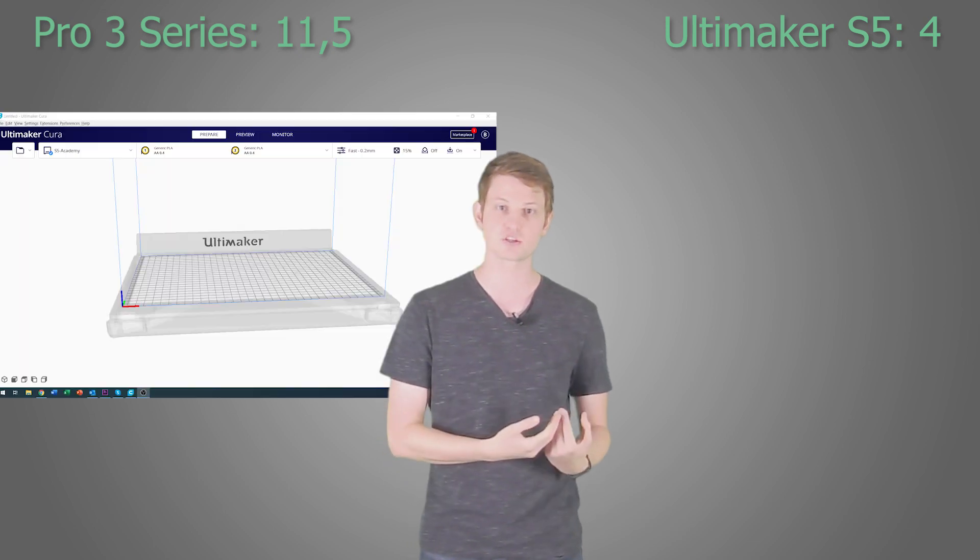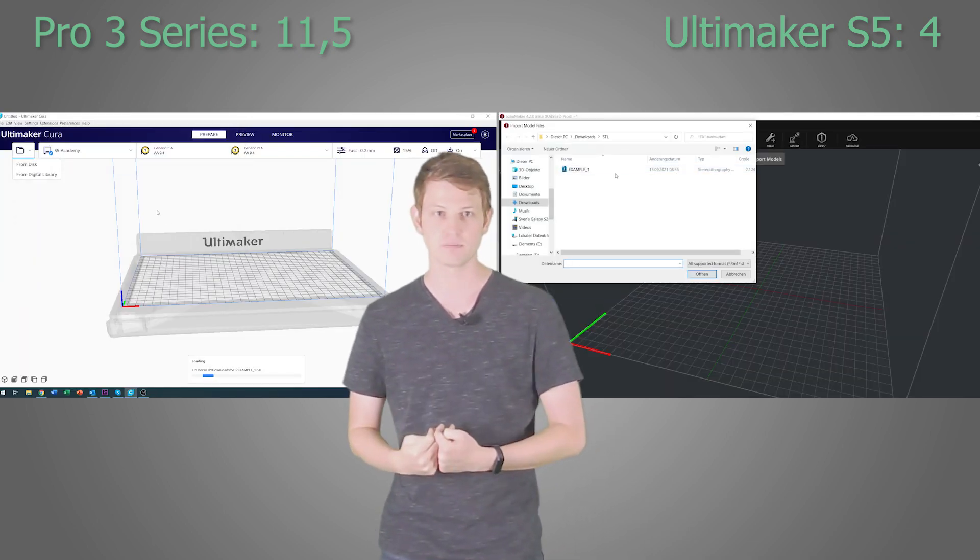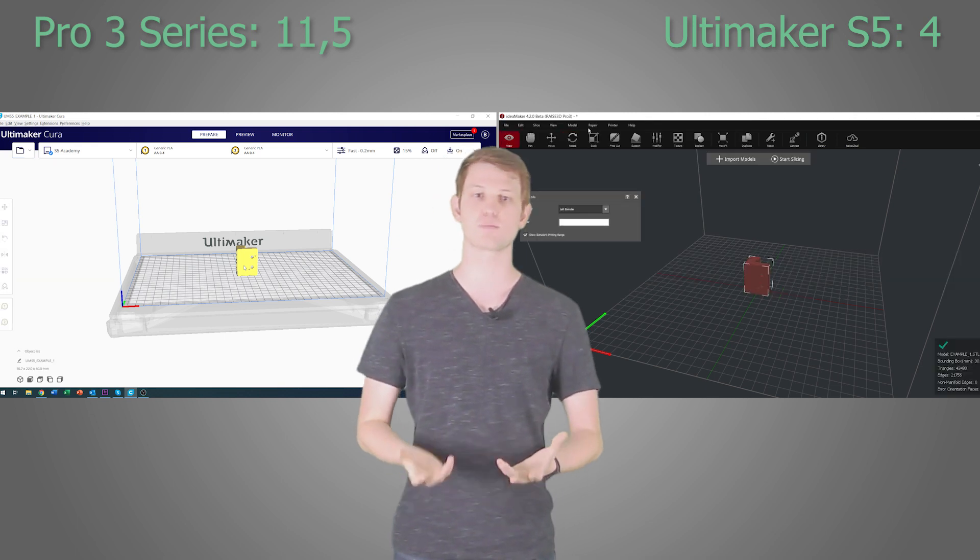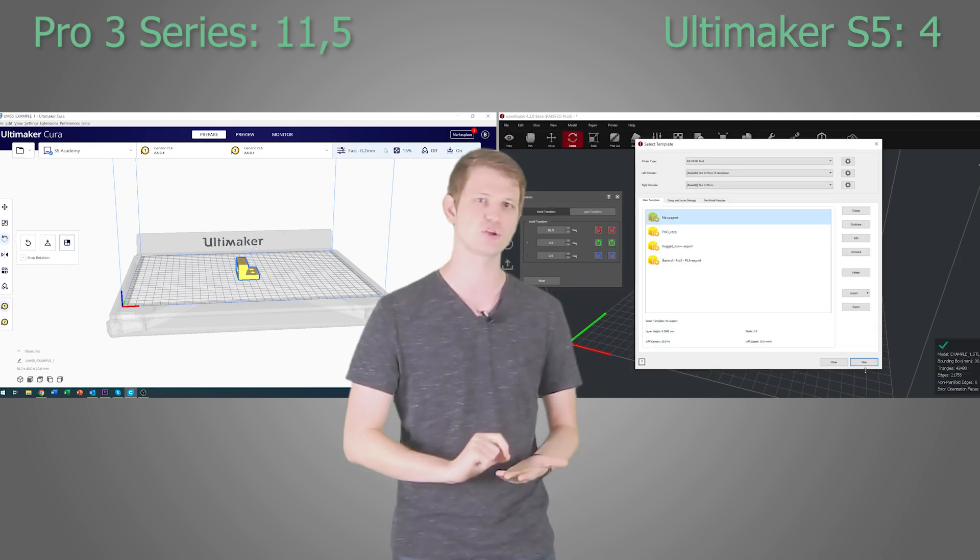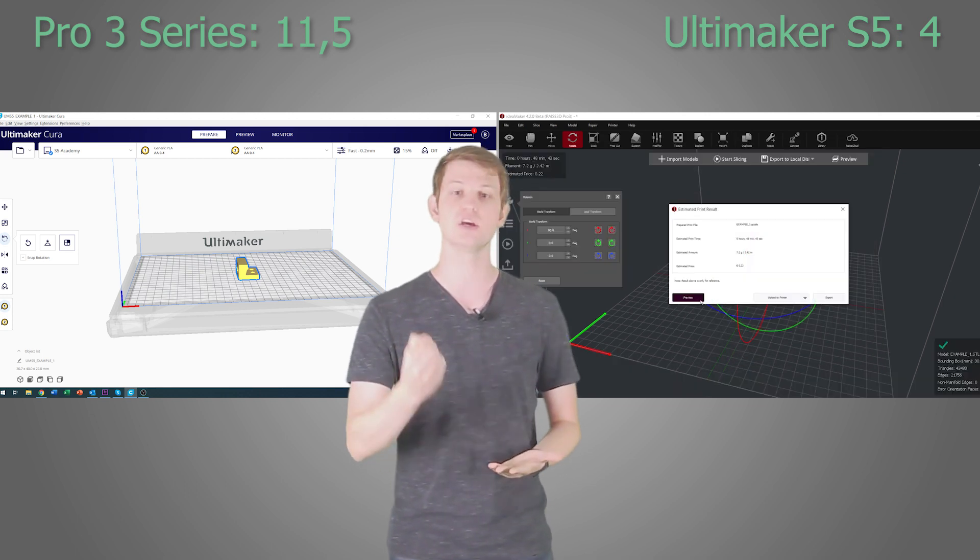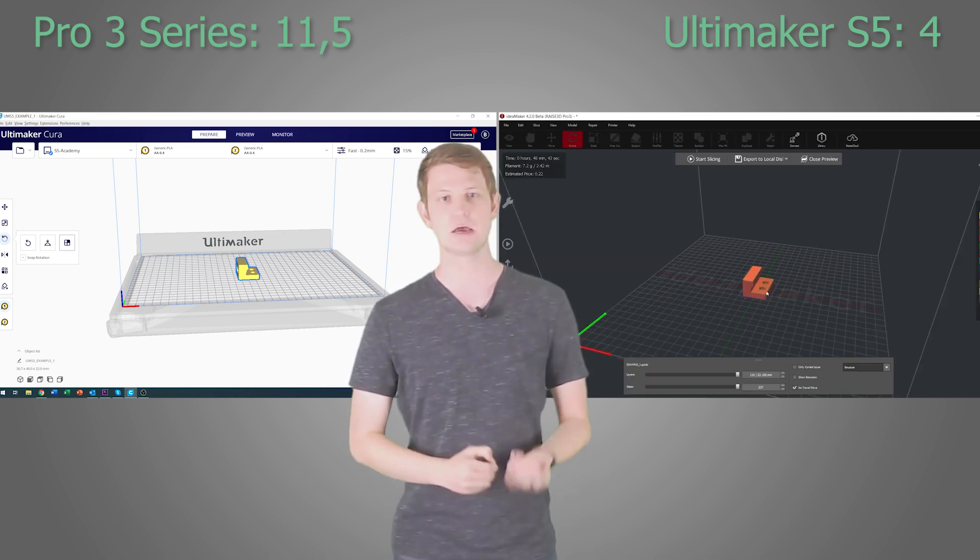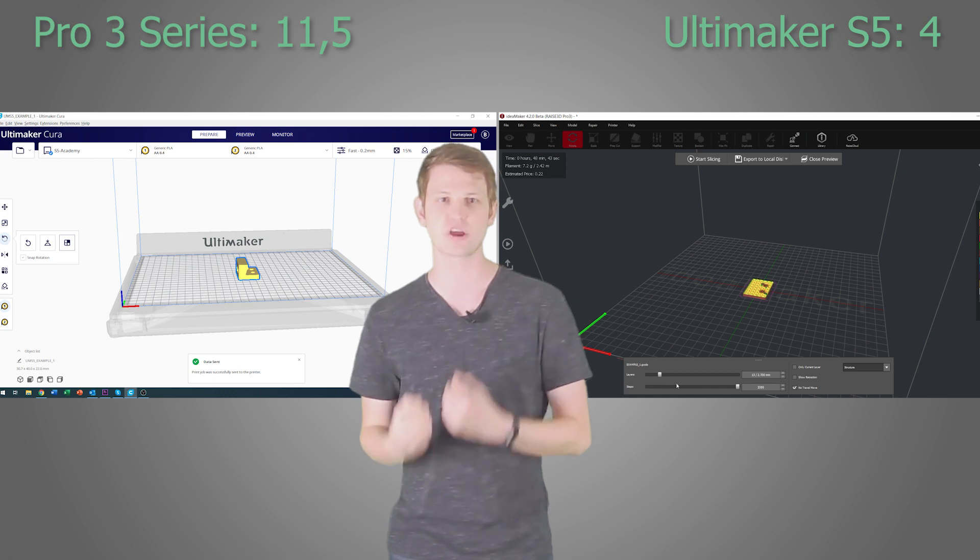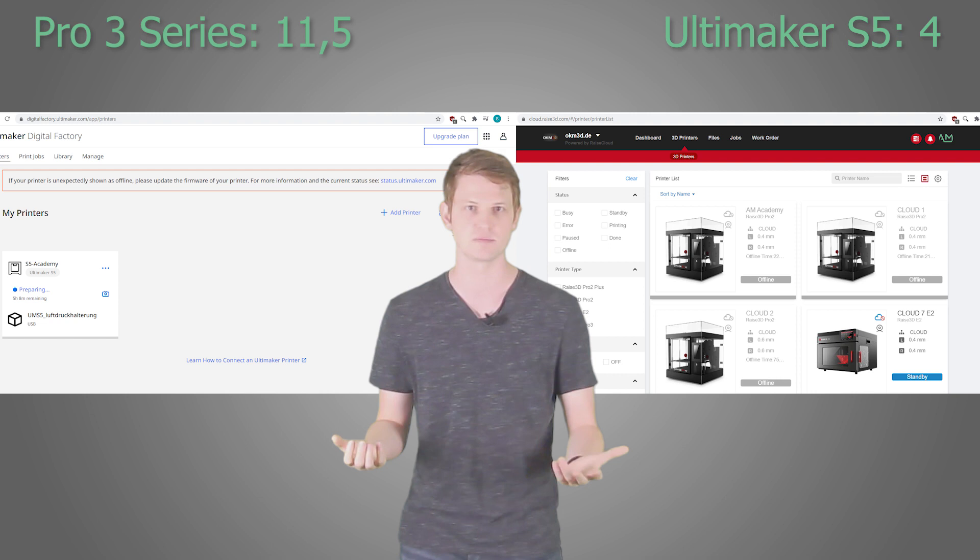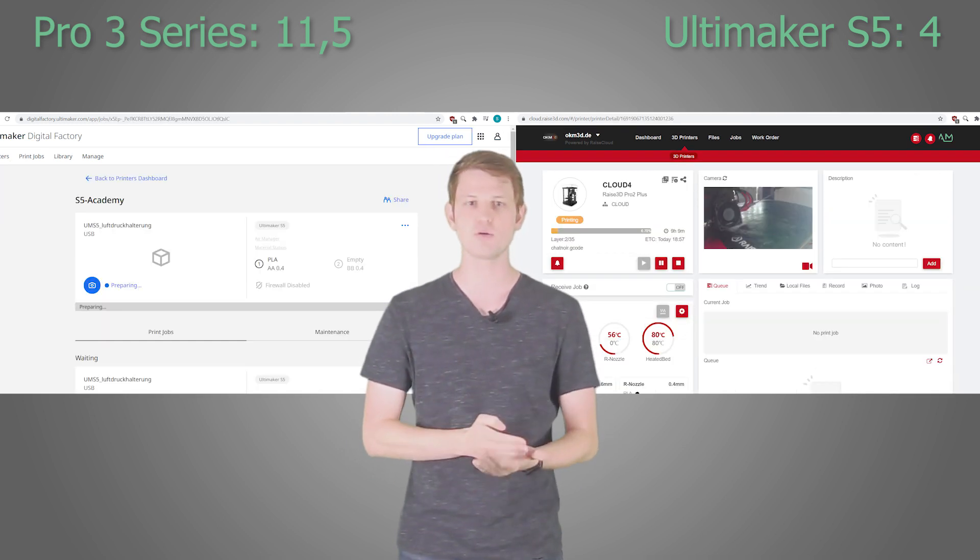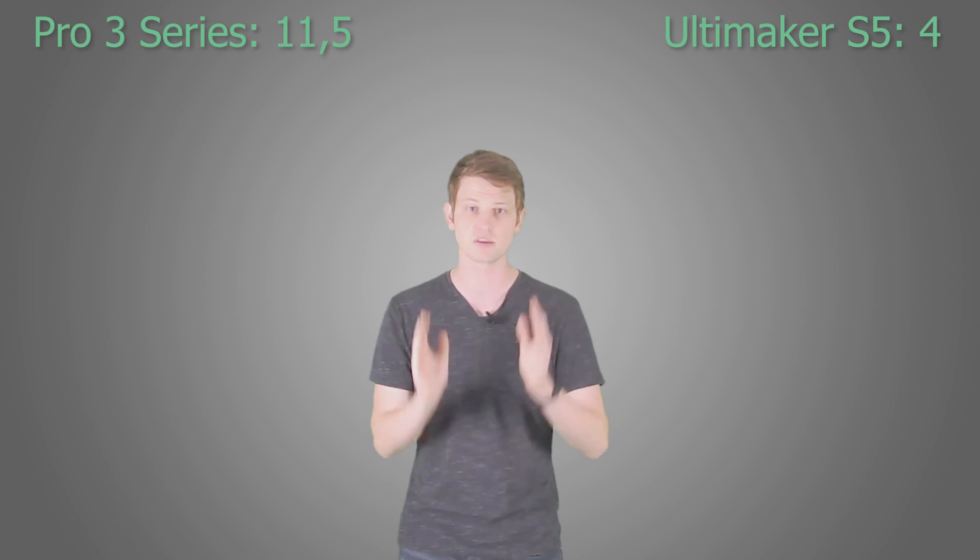Each of these manufacturers has developed their own slicing software for use with their printers. For Ultimaker there's Cura, and Raise3D named theirs IdeaMaker. Both are great solutions for both novice and experienced users, allowing for easy streamlined part preparation as well as deep dive manipulation of very complex settings. Both softwares also feature an integration into their developer's cloud service, the Ultimaker Factory or the Raise Cloud as they are named. These both allow for remote monitoring and management of connected printers. I call it a tie on the software front.